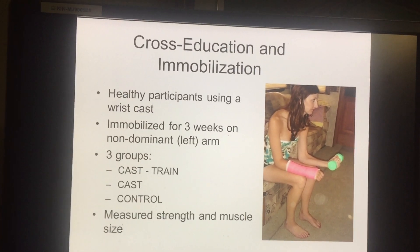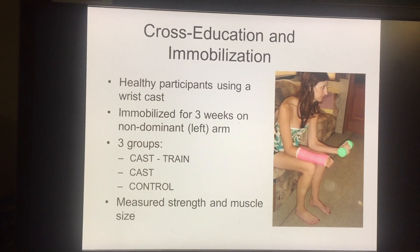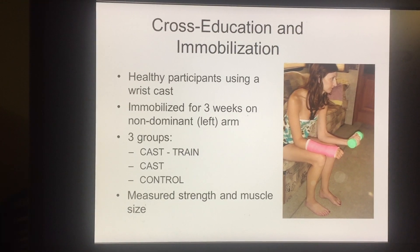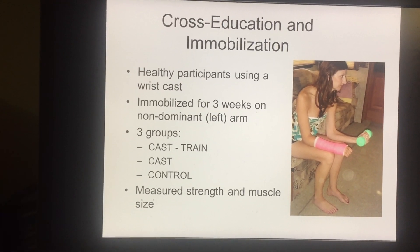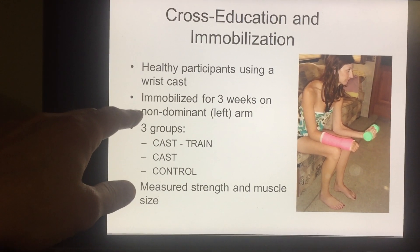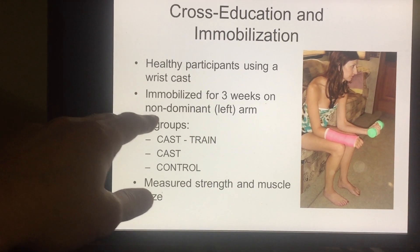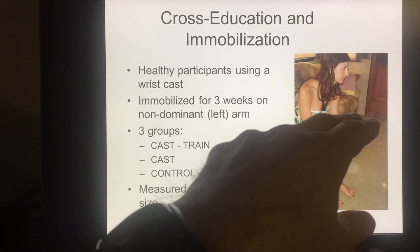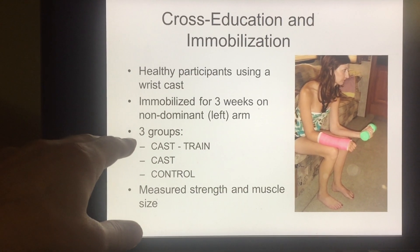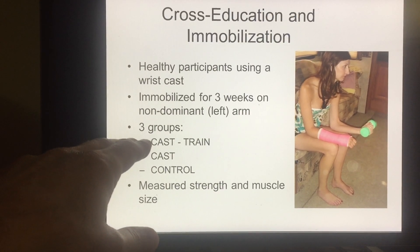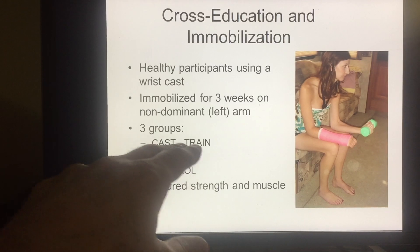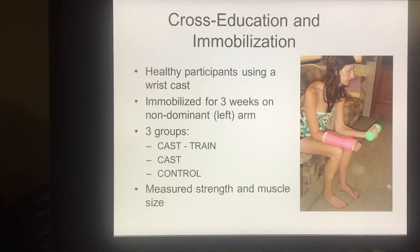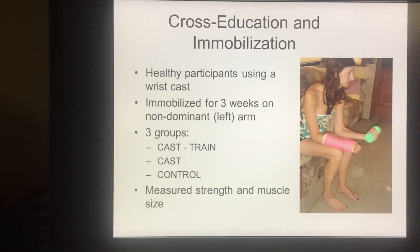We looked at a couple of experiments using this concept. In the first one, we took healthy people and put them into casts for three weeks, then trained the uncasted side to see what would happen to the casted side. The non-dominant left arm was casted. We had three groups: one casted and trained the right arm, one casted with no training, and a control group with neither casting nor training. We measured strength and muscle size changes over three weeks.